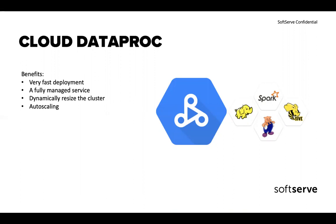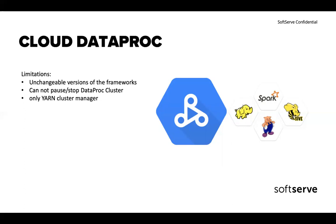The benefits of Cloud Dataproc are very fast deployment and fully managed service — you just write code, no operations work. You can dynamically resize the cluster and it supports autoscaling by metrics. Limitations: you have no choice of selecting a specific version of the used framework — for example, Dataproc uses Apache Spark version 2.3, and you can only use that version. You cannot pause and stop a Dataproc cluster to save money — you can only delete the cluster entirely, though the job history will be saved. You can cover this functionality via Cloud Composer. And you cannot choose a cluster manager — you can only use YARN.